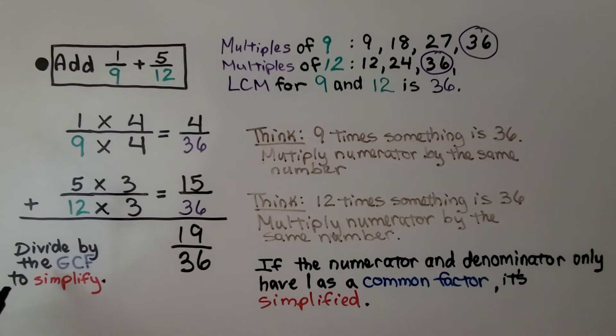If we needed to simplify this, we would divide by the greatest common factor for the numerator and denominator. But if the numerator and denominator only have 1 as a common factor, it's simplified. The factors for 19 are 1 and 19. We're done. The answer is 19/36.